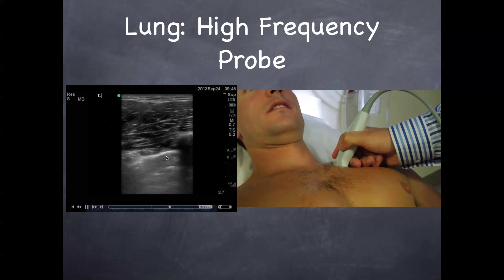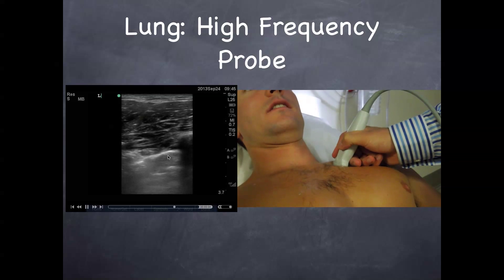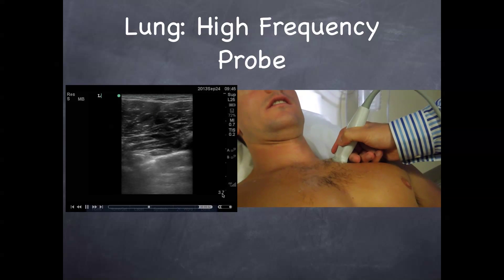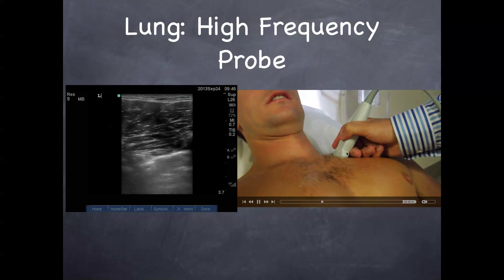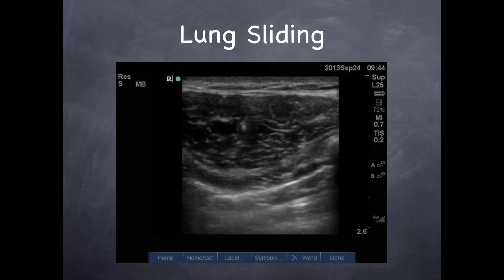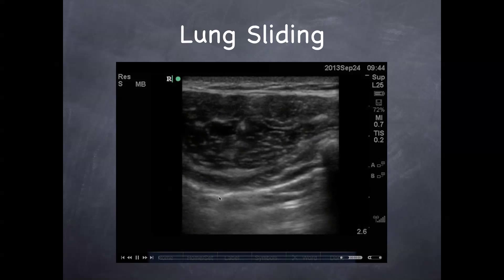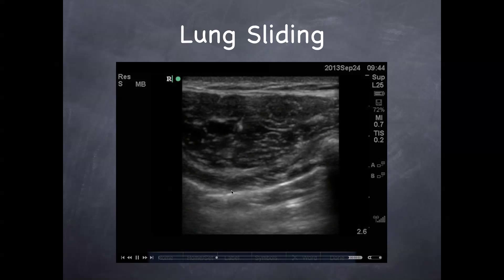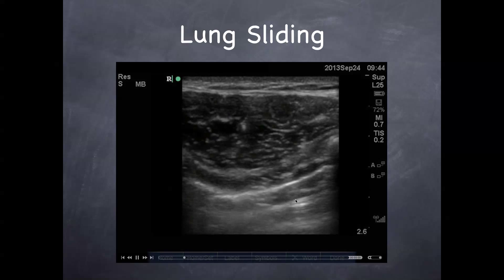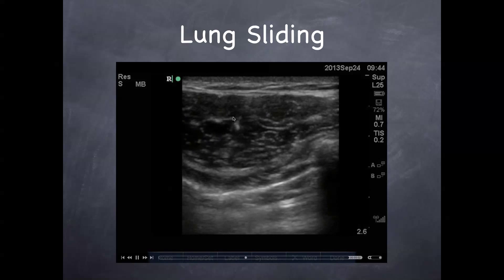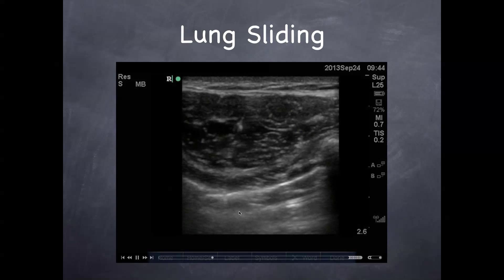With the next patient, try changing the gain up and down to get a good view. As you can see, we're really shallow at 3.7 centimeters, and we're using the vascular high-frequency probe. Here's lung sliding again — the bat sign, ribs on each side with sliding. And here are some little comet tails. These aren't B-lines, these are just comet tails, and these are normal artifacts. Soft tissue here, pleural line here. Parietal pleura, visceral pleura, lung sliding — normal.